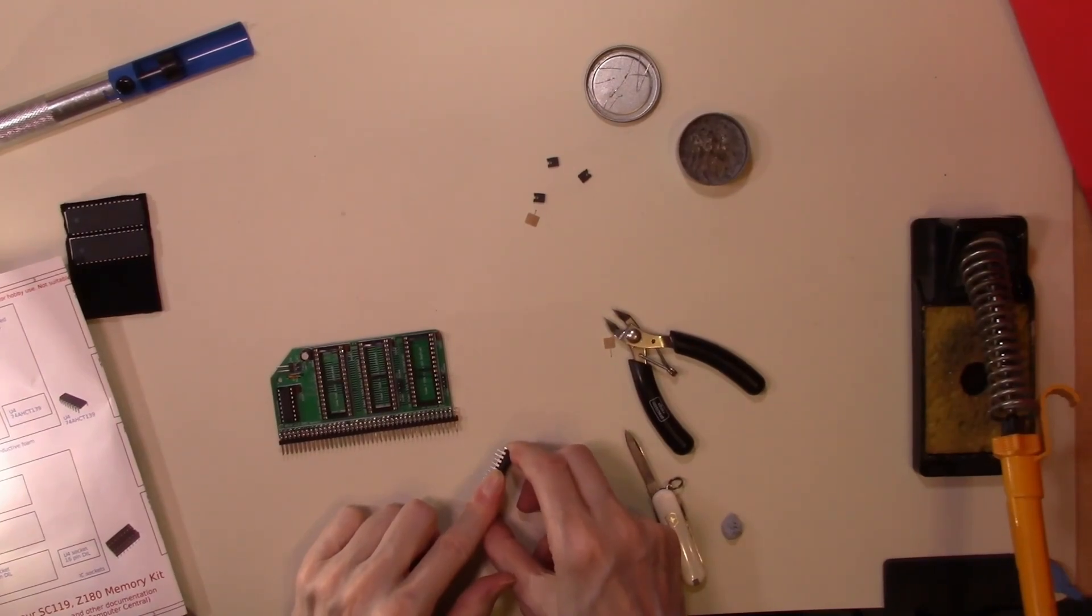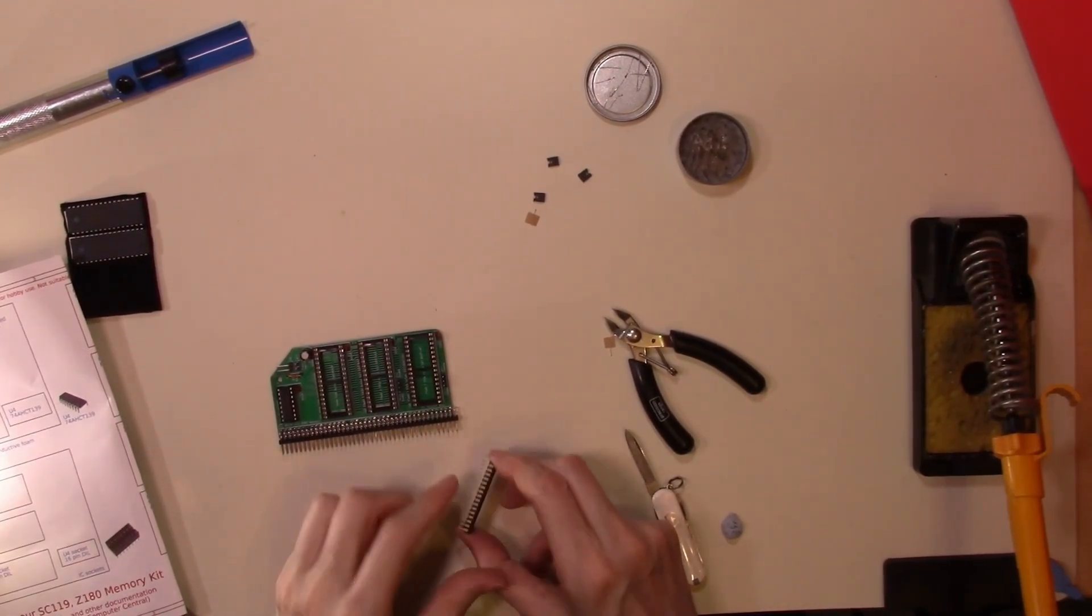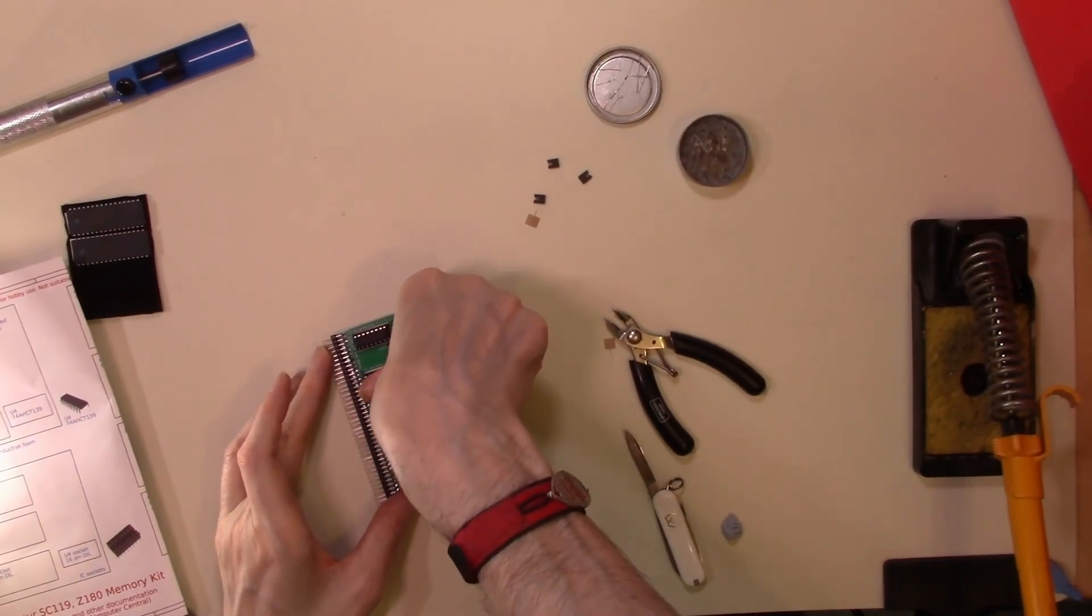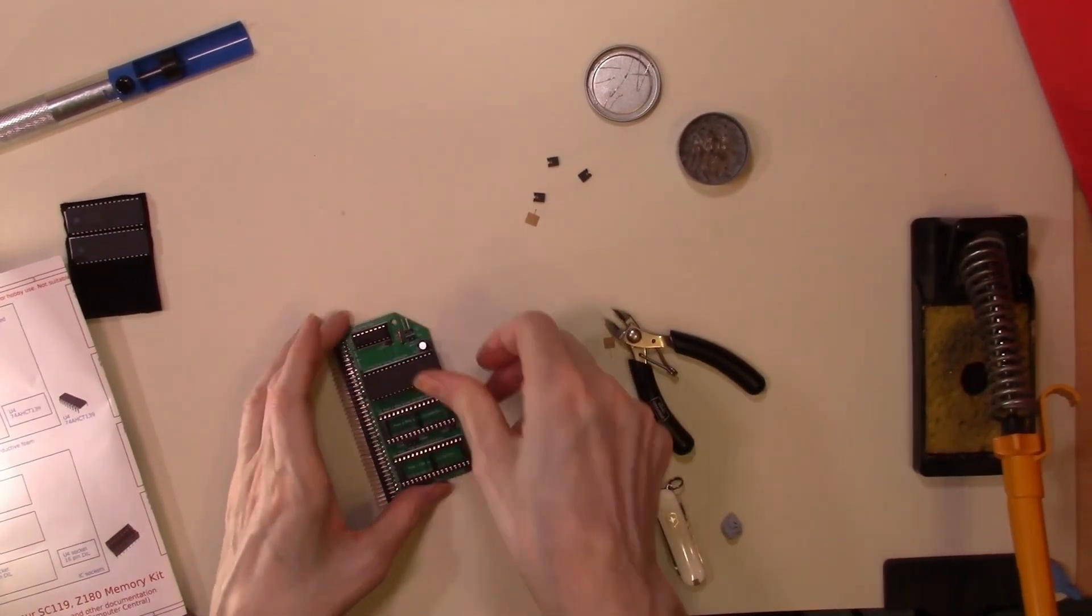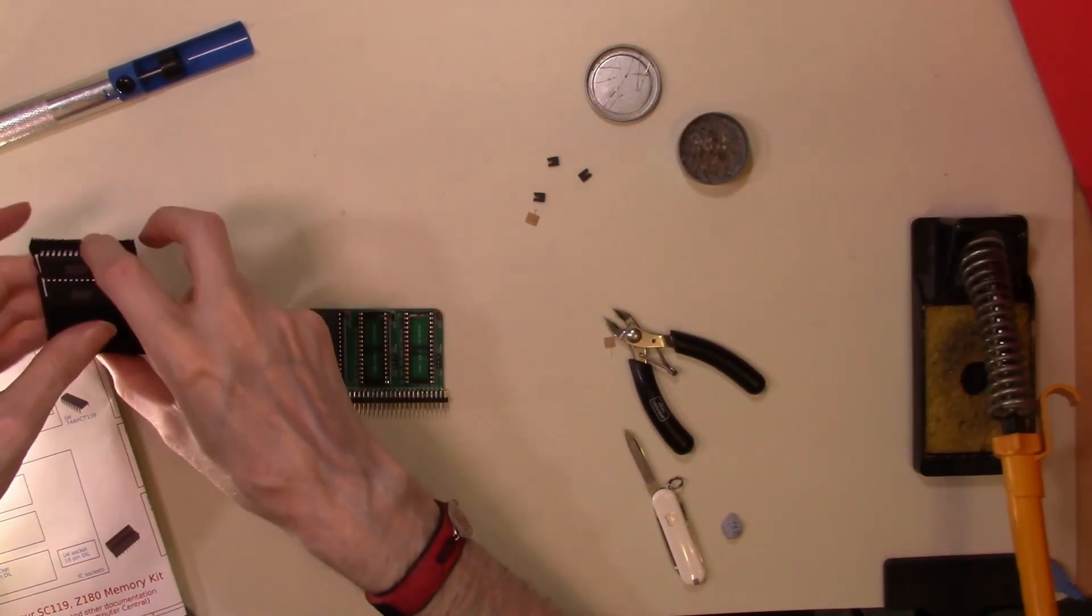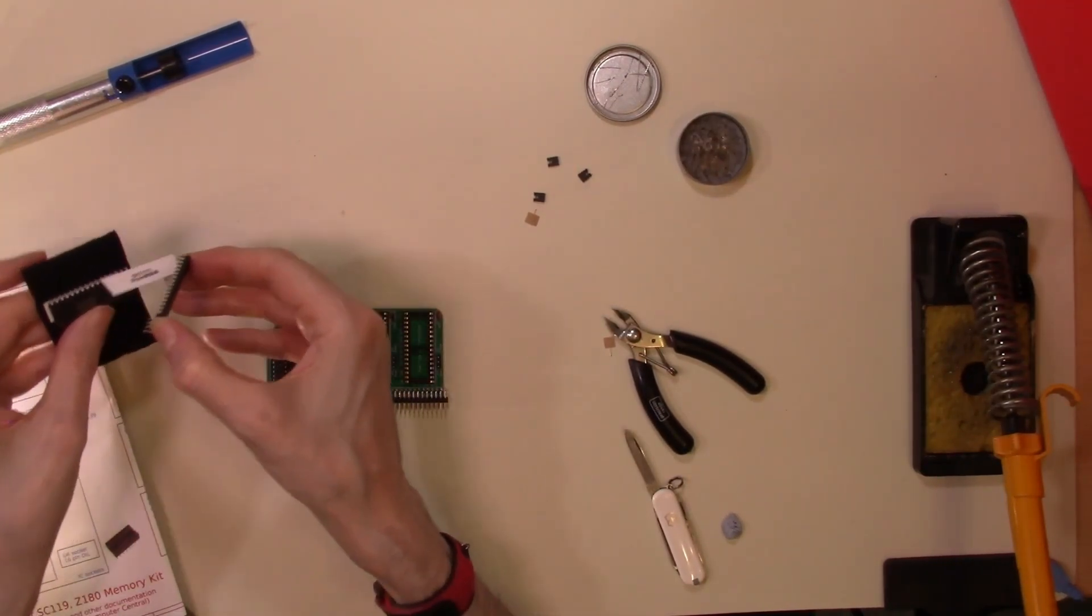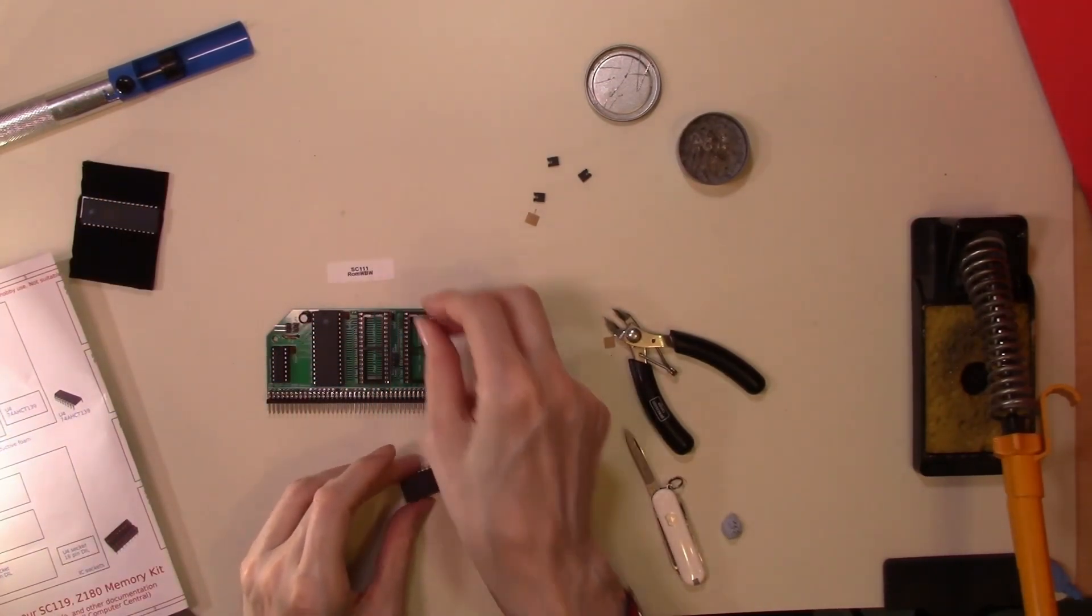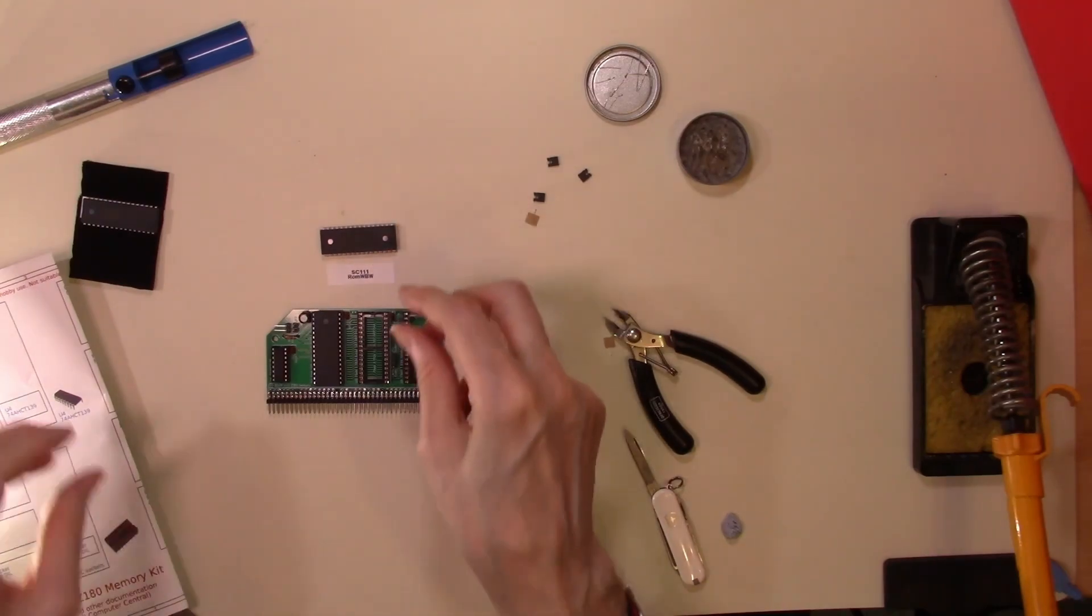And we'll just bend the pins in slightly as we did before. Want to make sure we don't bend any of these pins. Which should be ours in place. And that's the chip securely into its socket. So just the two ROMs to go.